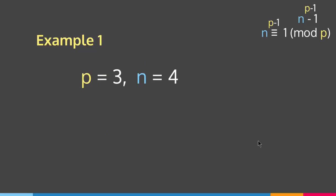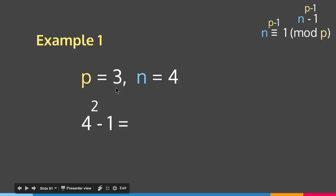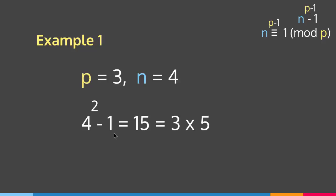Suppose p = 3 and n = 4. Then n to the p minus 1 minus 1 has to be a multiple of 3. So we compute 4 to the (3 minus 1) = 4 squared = 16. Then 16 minus 1 equals 15, and 15 = 3 × 5. As you can see, 15 is a multiple of 3, confirming that n to the p minus 1 minus 1 is a multiple of p.